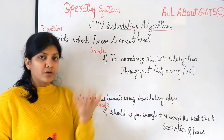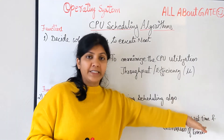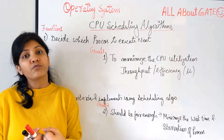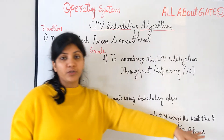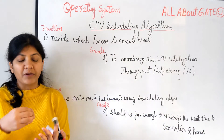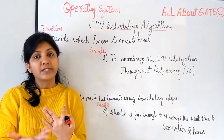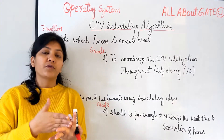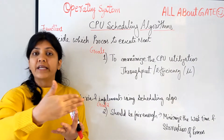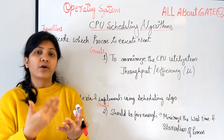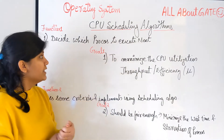The next goal is that the scheduling should be fair and unbiased towards all processes — it should minimize the wait time for each process so that no process has to wait for a very long period. It should also not cause starvation, which means a process keeps waiting for its turn and never gets allocated the CPU. If a scheduling algorithm causes some processes to starve, it is definitely not considered a good algorithm.